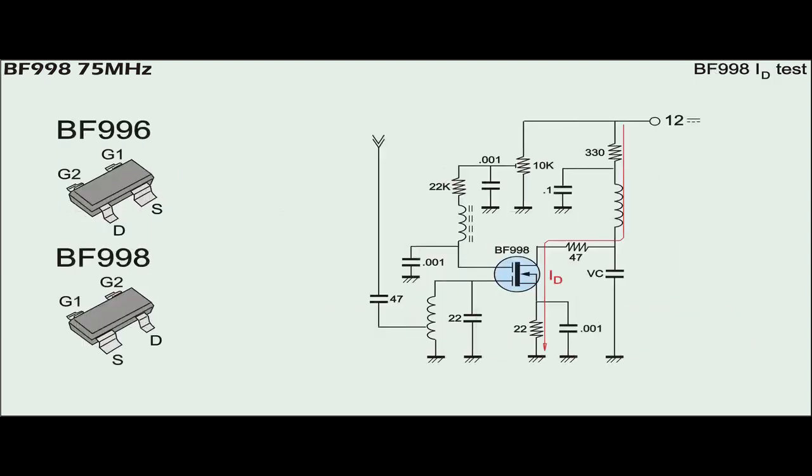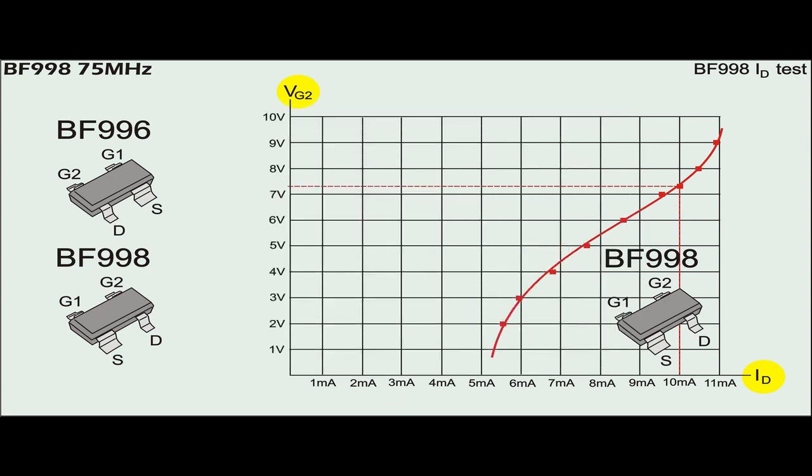With the configuration shown here, the 998 is put under test to observe its drain current at different bias voltage on gate 2. According to the test, voltage 7.3 volts at gate 2 yields drain current of 10 mA.